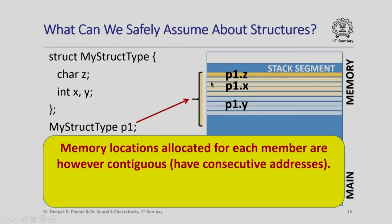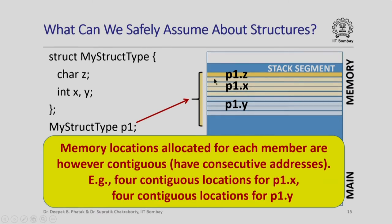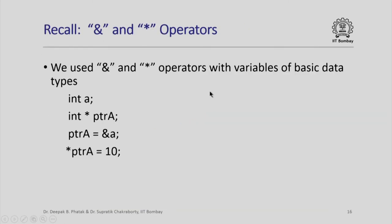However, we can assume that the memory locations allocated for a particular member like p1.x are all going to be contiguous — they are going to have consecutive addresses. So for example, we can assume that p1.x will be stored in four contiguous locations and similarly p1.y will be stored in four contiguous locations. We cannot and should not assume that there will be no gaps or paddings between p1.x and p1.y, nor should we assume that p1.x will be stored earlier in the address space than p1.y. Now let us see how we are going to find out addresses of structures in memory and how we are going to use these addresses to access these structures.